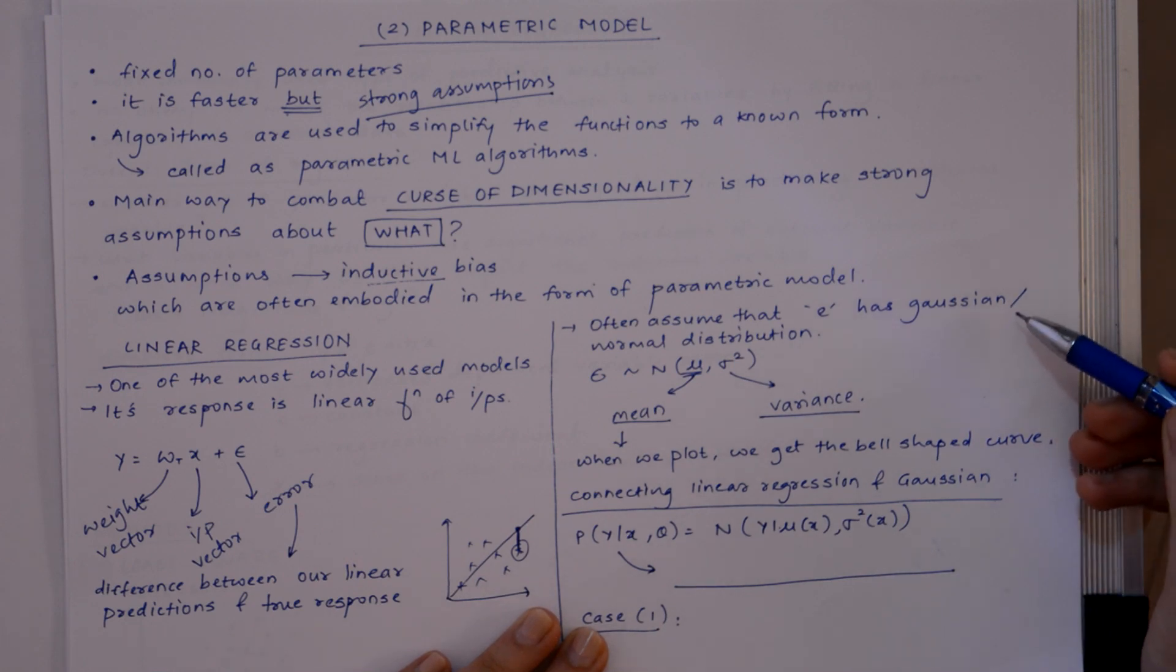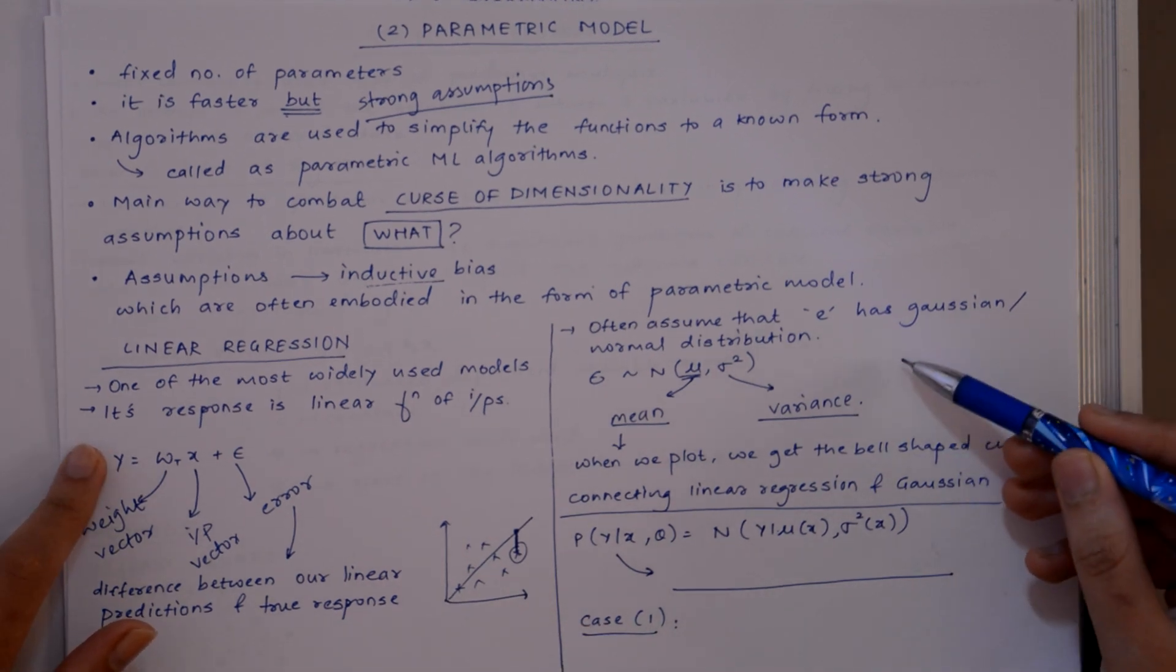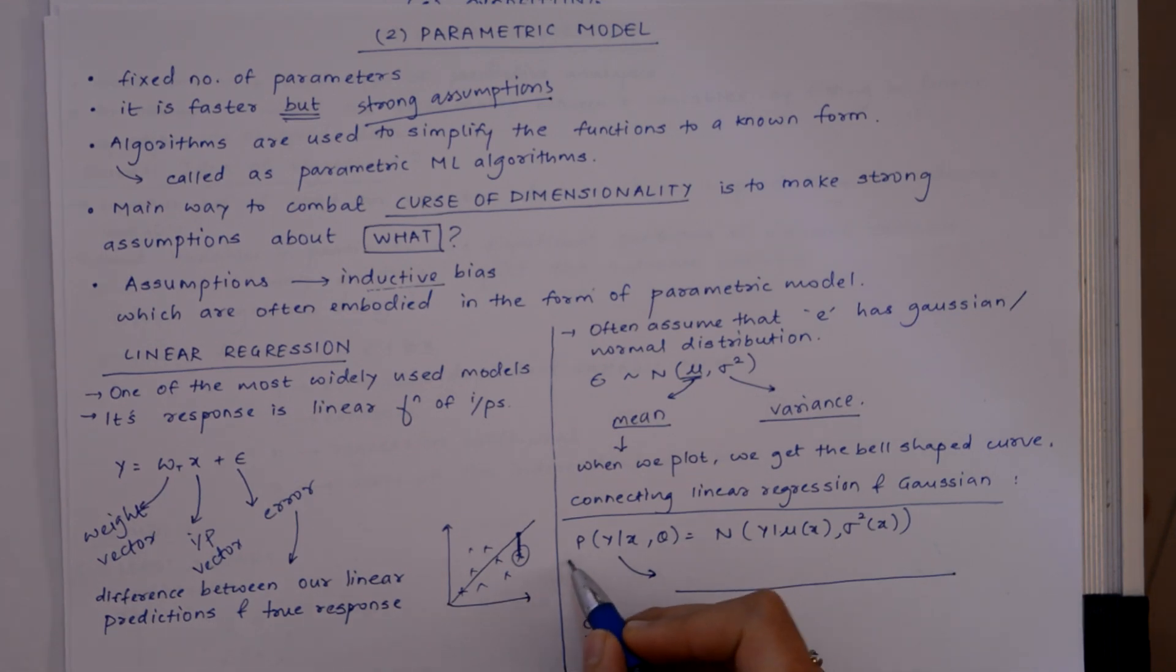When we plot the mean, we get a bell-shaped curve as we have assumed that it is a Gaussian distribution. This was for linear regression and this is for Gaussian, and when we combine both of them, what we get is this.